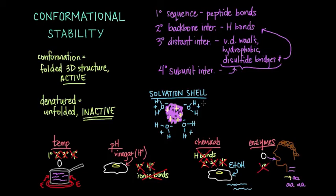So what did we learn? Well, we learned that the conformational stability refers to all the forces that keep a protein properly folded in its active form. And this includes all the different levels of protein structure, as well as the solvation shell. And we also learned that a protein can be denatured into its inactive form by changing a variety of factors in its environment, including changing the temperature, the pH, adding chemicals or enzymes.